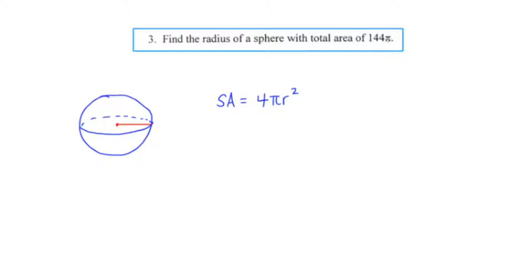But in this particular problem, they tell us what that area is. They say it's 144π. So I'm going to plug that in for surface area. Now take note of the fact that the π exists on both sides of the equation, and as a result, it's going to cancel out.